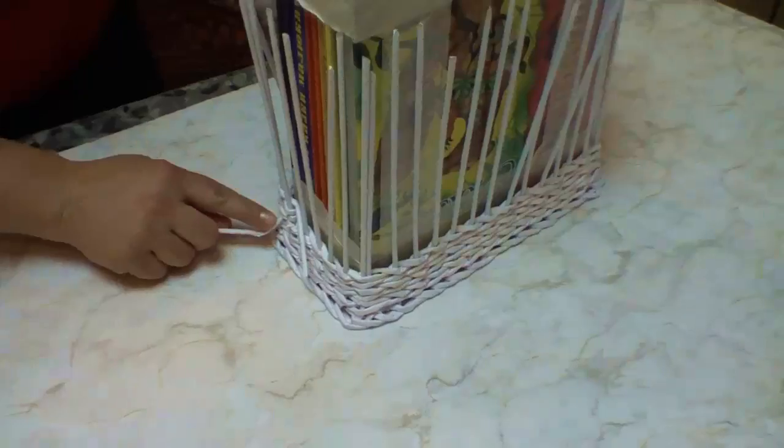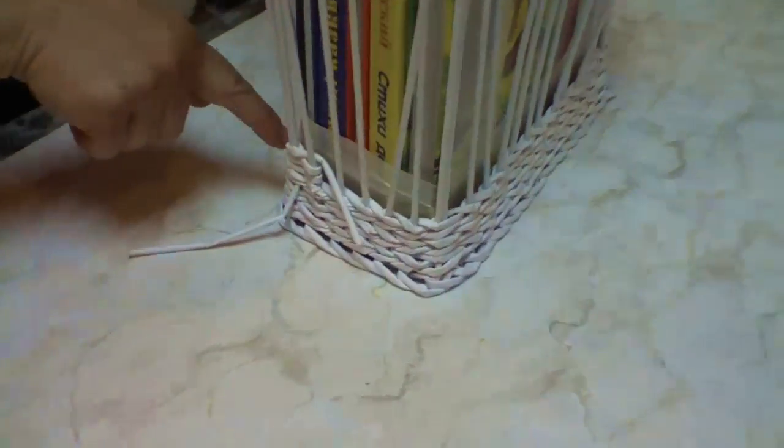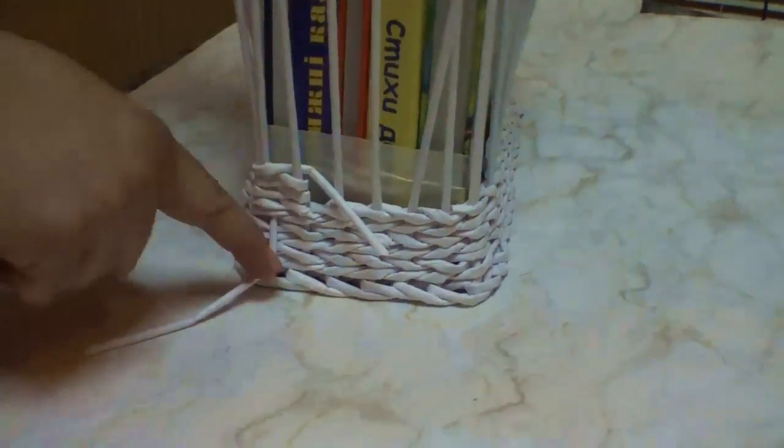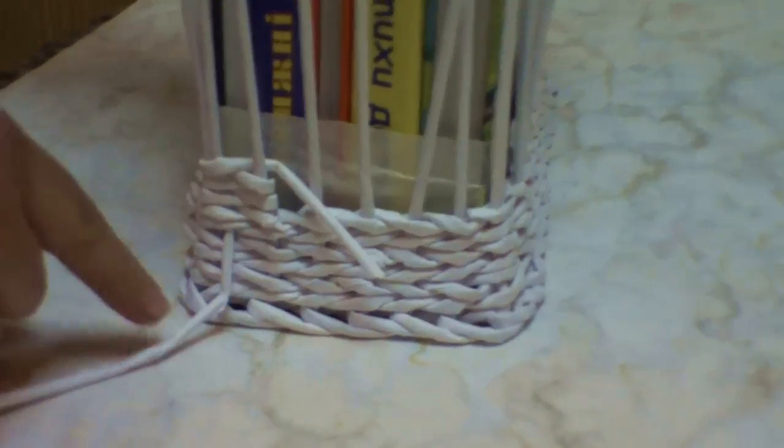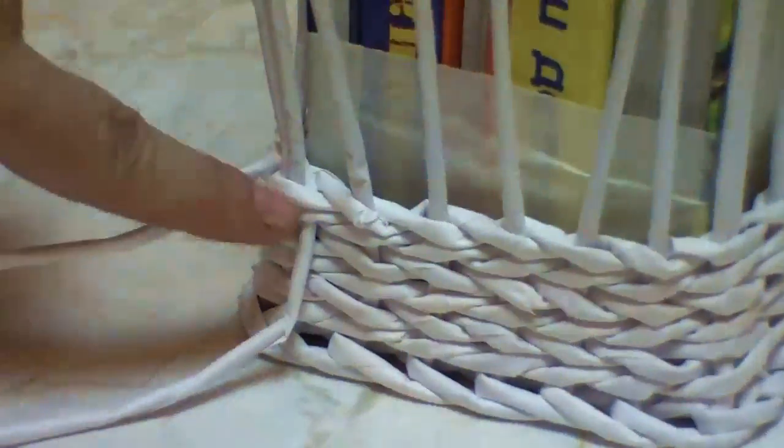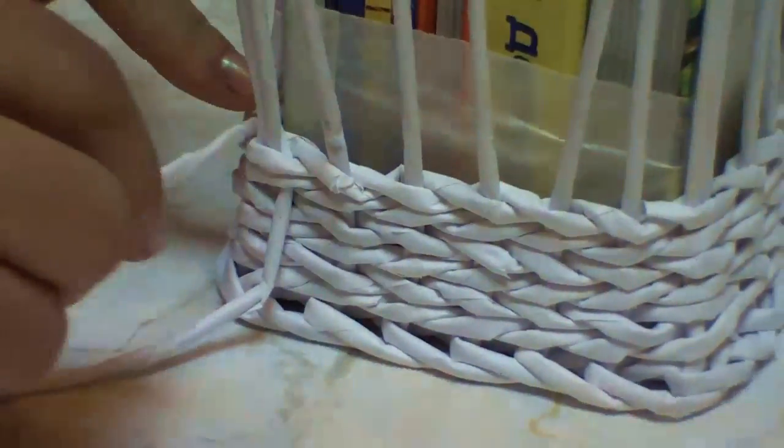We have woven six rows. Then I have tucked one of the working tubes in, like we usually do when finishing. And started weaving the pattern with the second one. One of the tubes is inserted, with the other one we start weaving the first element.